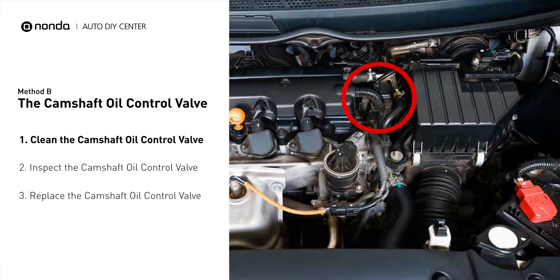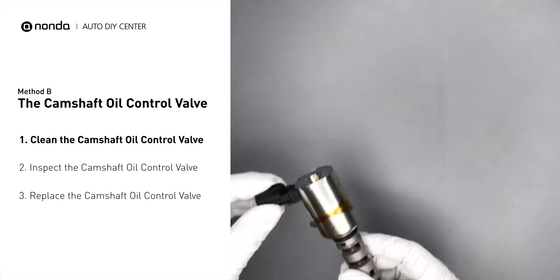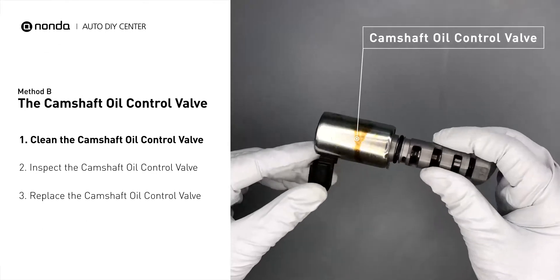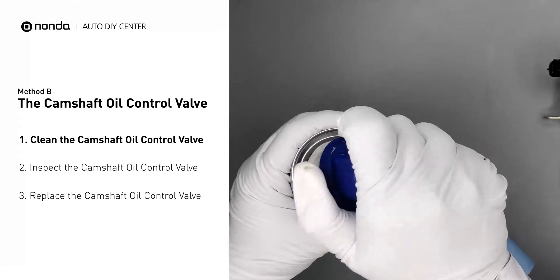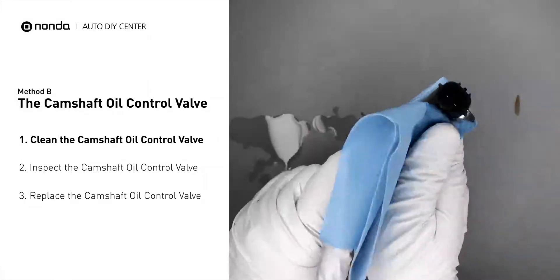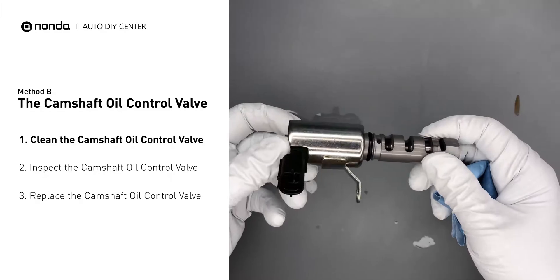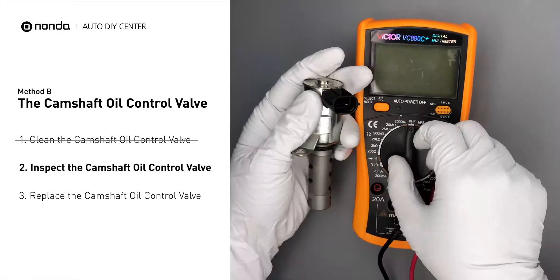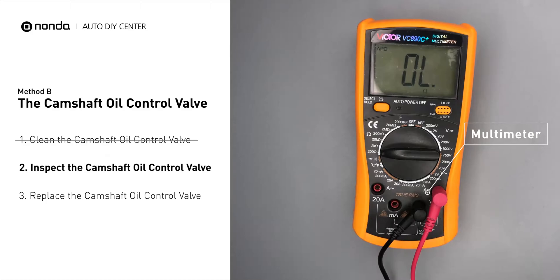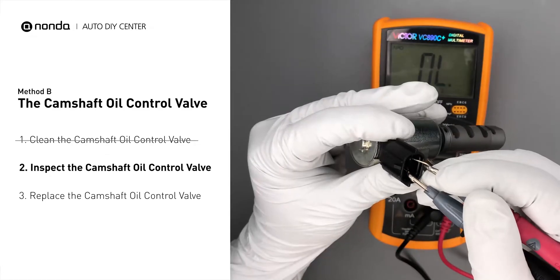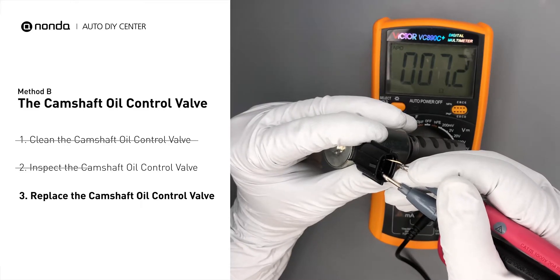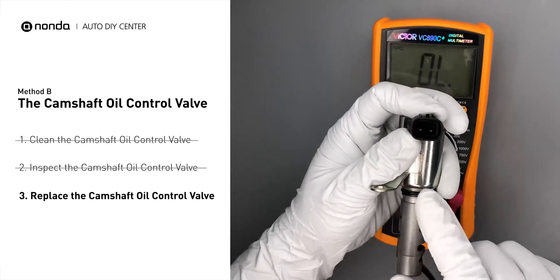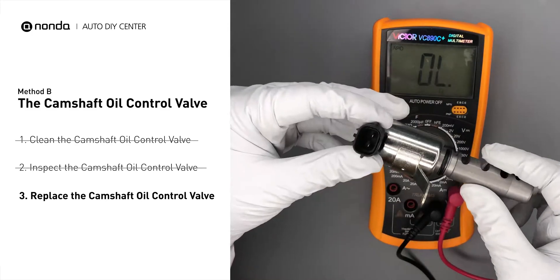The camshaft oil control valves are usually located in cars that have engines with variable valve timing systems. First, carefully remove the camshaft oil control valve from the engine. Use a valve cleaner to clean the camshaft oil control valve. Then use a multimeter to perform a test on the camshaft oil control valve. At an ambient temperature of 68 degrees Fahrenheit, the valve resistance should be between 6.9 ohms and 7.9 ohms. If you do not get a reading, this indicates that the camshaft oil control valve is faulty and needs to be replaced.